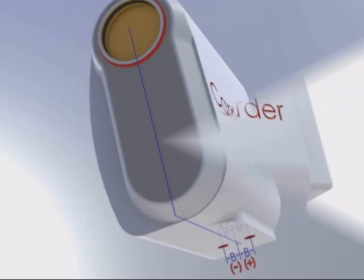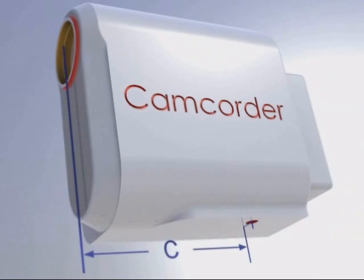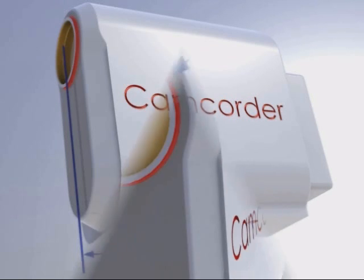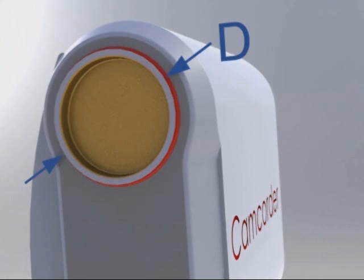The C dimension is the distance from the very front of the camera to the threaded hole for the tripod shoe screw. Generally, the bezel around the camera lens is at the very front of the camera.